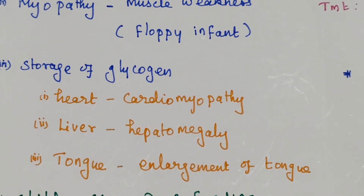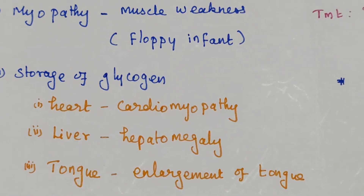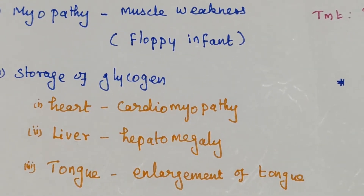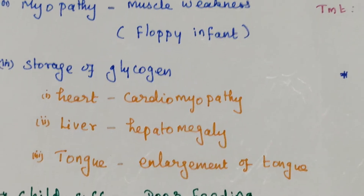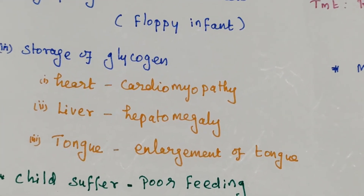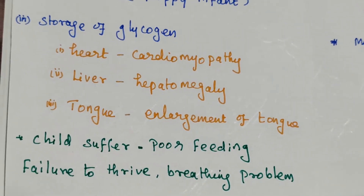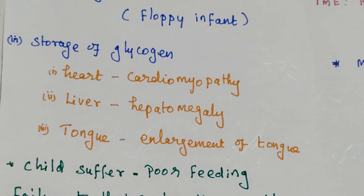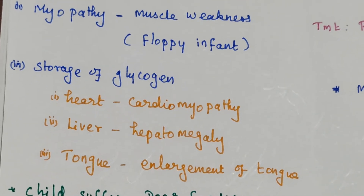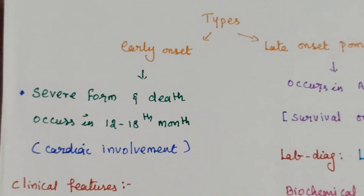In the heart, it causes cardiomyopathy. In the liver, it causes hepatomegaly. Under the tongue, it causes enlargement of the tongue. The child also suffers from fever, feeding difficulties, and breathing problems. These are the symptoms of early onset Pompe's disease.